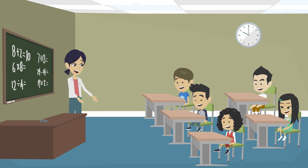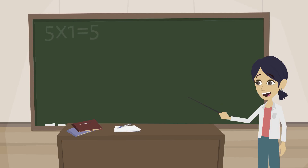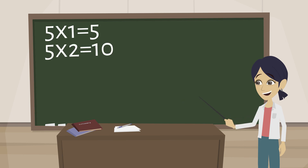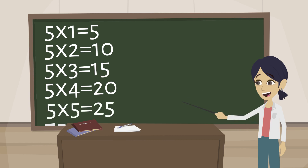Sing with me, children. The table of 5. 5 1s are 5, 5 2s are 10, 5 3s are 15, 5 4s are 20, 5 5s are 25,